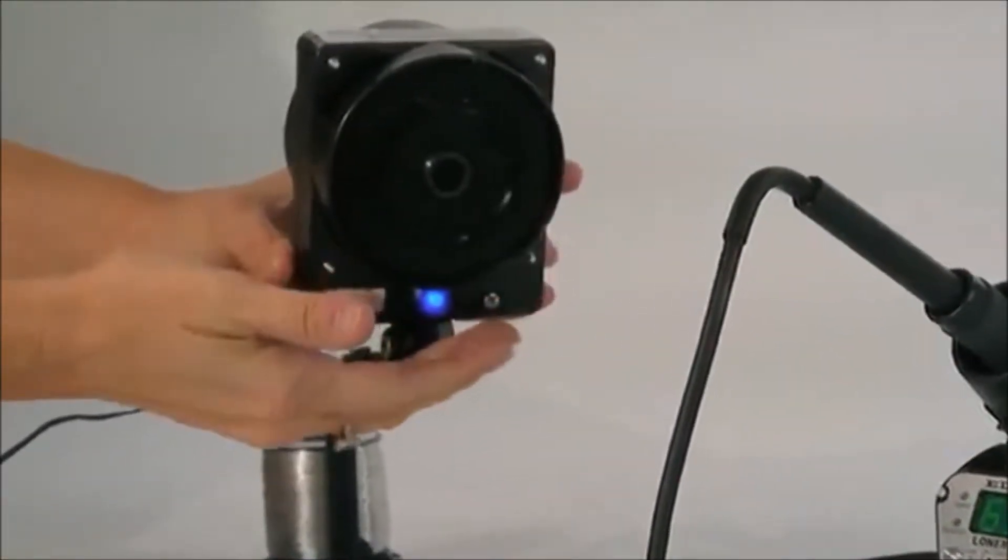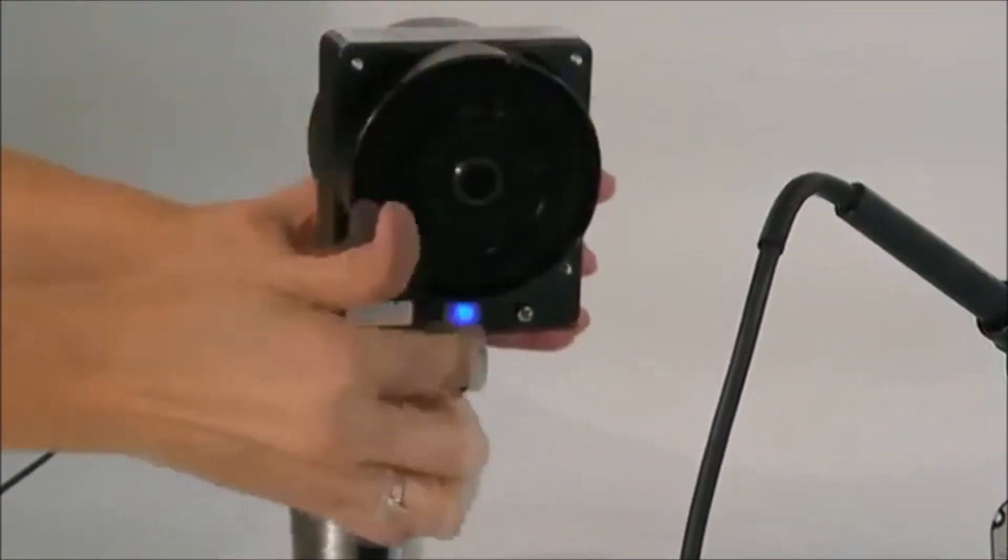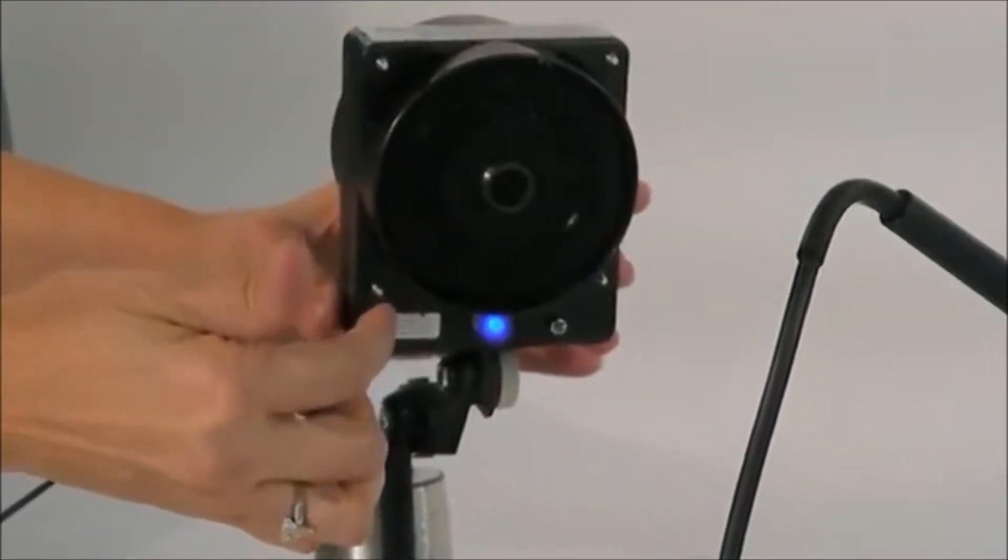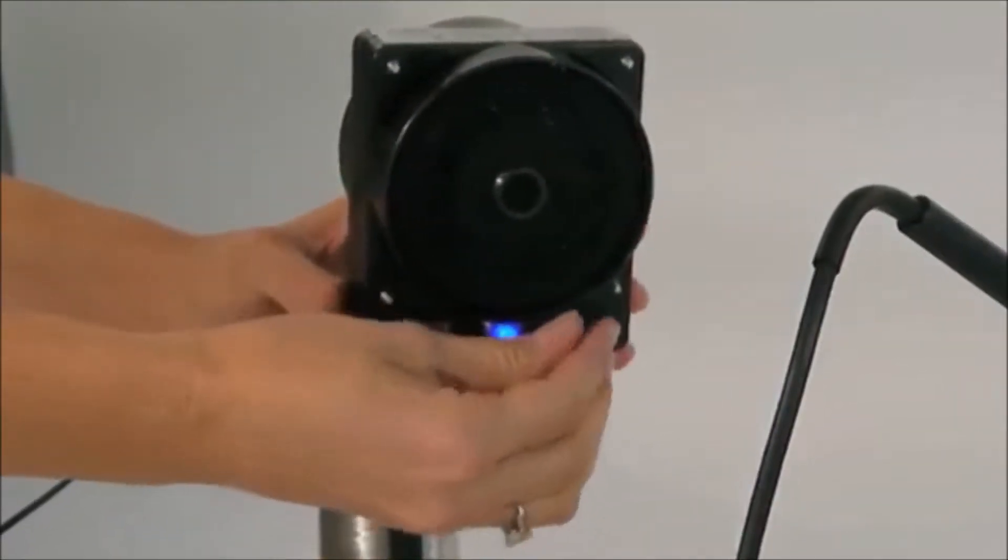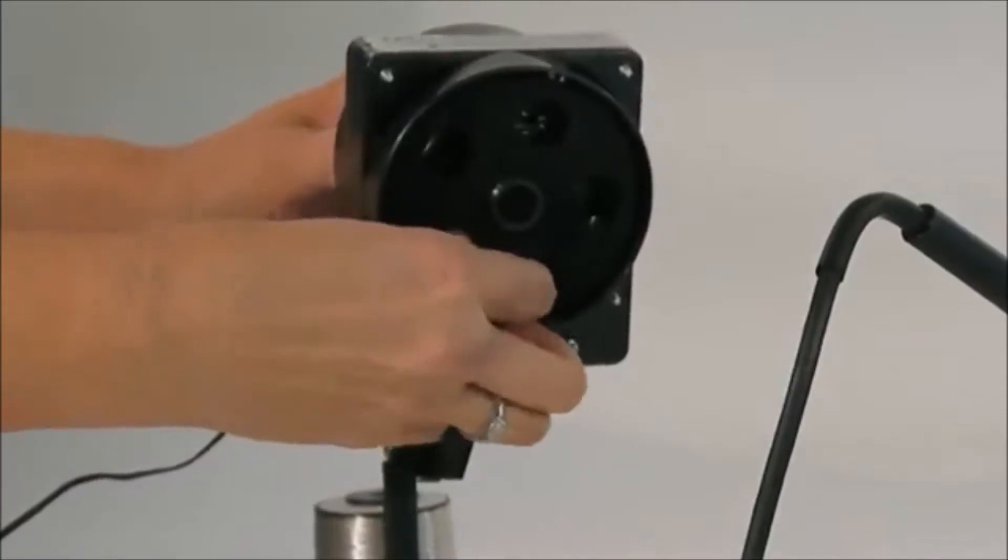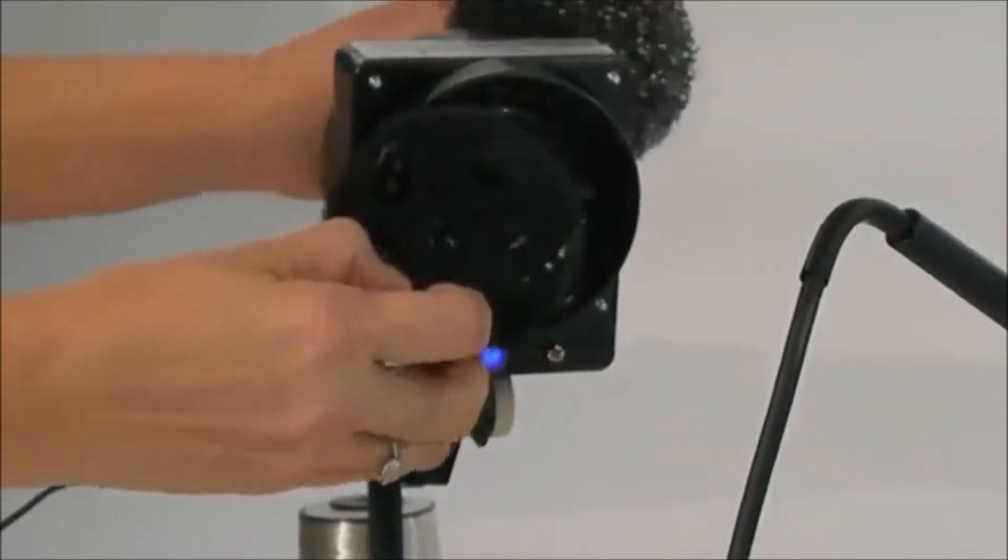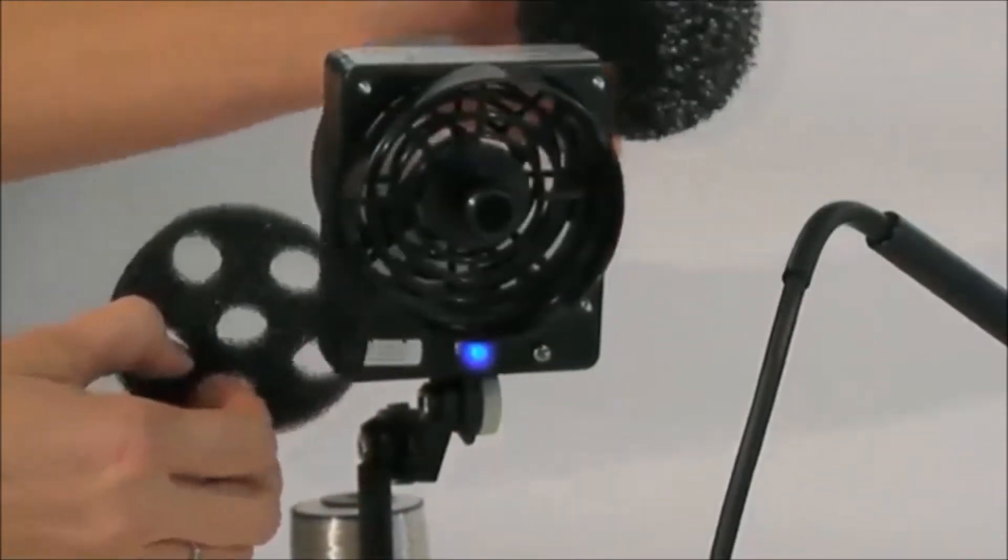Because the front filter rotates, it holds the fumes longer and together with a second charcoal filter provides eight times greater filtration than other benchtop extraction systems of this type.